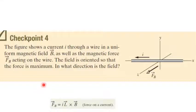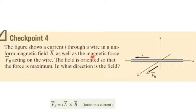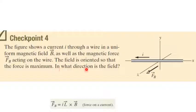As an example: a wire carries current I and experiences a magnetic force F_B in the positive Z direction. The figure shows the current through the wire in an applied magnetic field, with the field oriented so that the force is maximum — meaning the field is normal to the current, i.e., the angle between field and current is 90 degrees. The question is: in what direction is the magnetic field — in the X, Y, or Z direction?